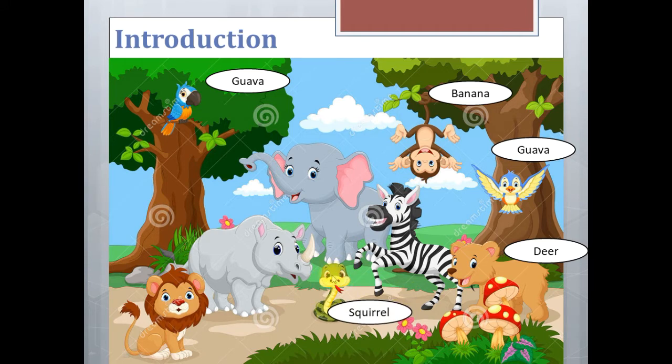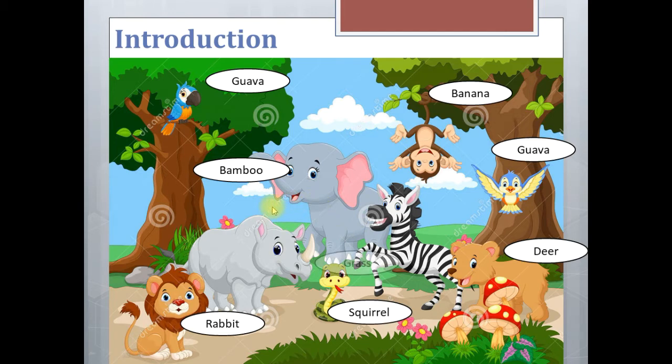Red snake also consumes the flesh of other animals like squirrel. Lion also consumes the flesh of other animals like rabbit. Elephants consume plant materials such as bamboo and finally the zebra and rhinoceros, they also consume plant materials such as grass. Now you must understand that different animals feed on different types of food.